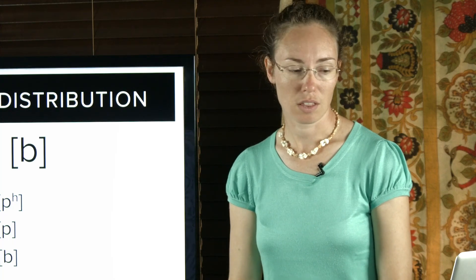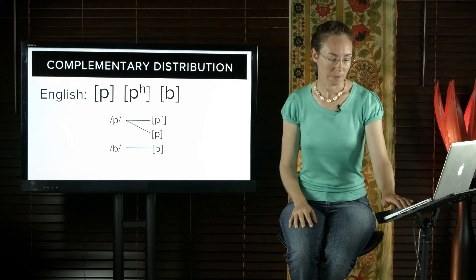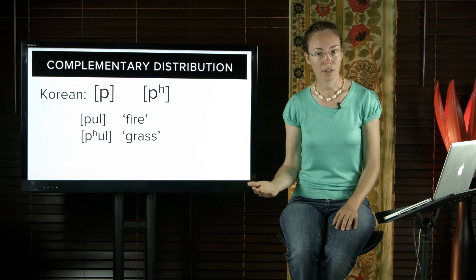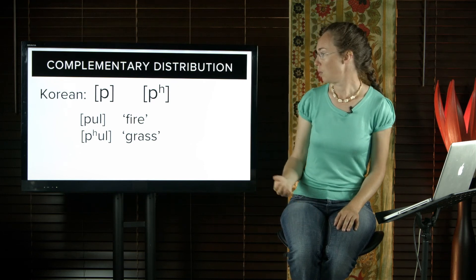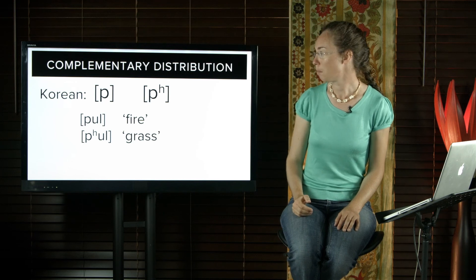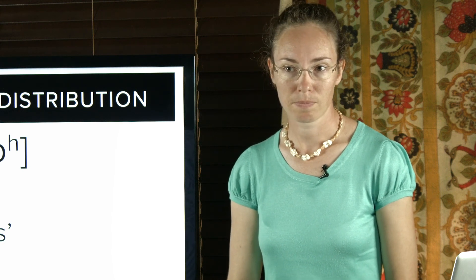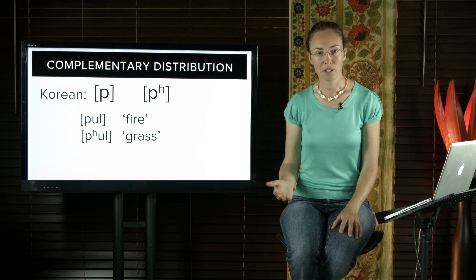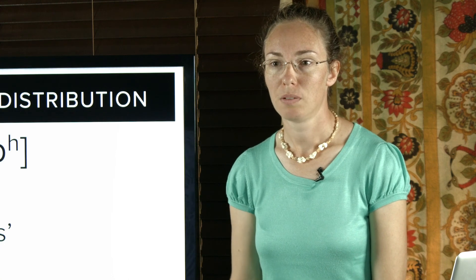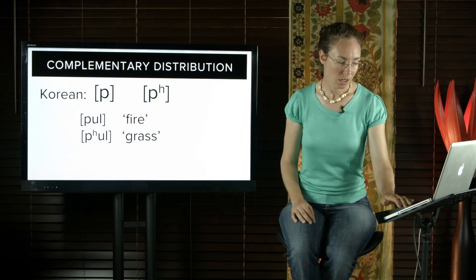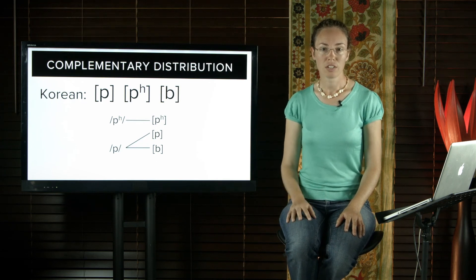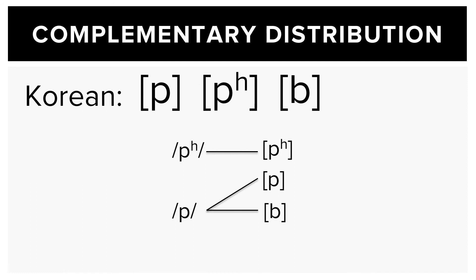Korean also has the three sounds p, aspirated p, and b. But in Korean, p and aspirated p make a difference for meaning: 'pul' means fire and 'pul' means grass, so they are separate phonemes. But in Korean, p and b belong together — 'puh' means law and 'muh buh' means lawlessness. So in Korean, the aspirated p represents one phoneme and the plain p represents both the unaspirated p and the b sounds.